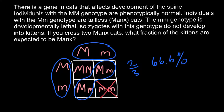One more time — we ignore those that would result in stillbirths and only count those that would result in live births. As you can see, two out of three live births are expected to be heterozygous, or Manx cats. And that's all for today — thank you for your attention!